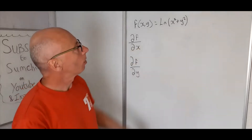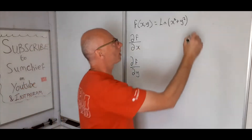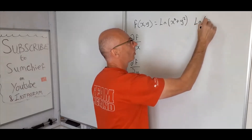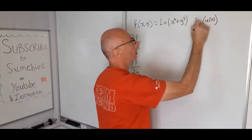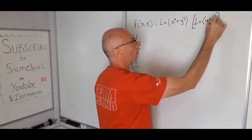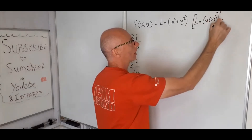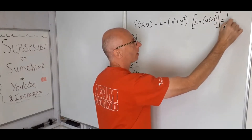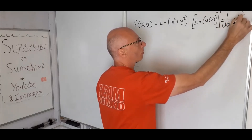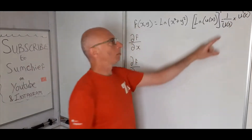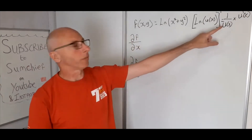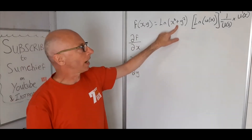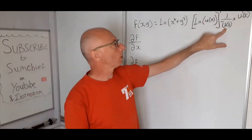What we do know is that the derivative of log of some function u of x is one over u of x, times the derivative of the input — the derivative of u of x. So whatever we've got inside the log, we find the derivative of that and multiply by the reciprocal of the inside.